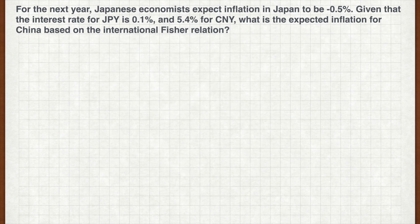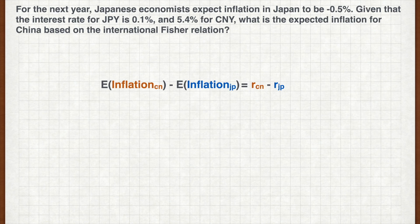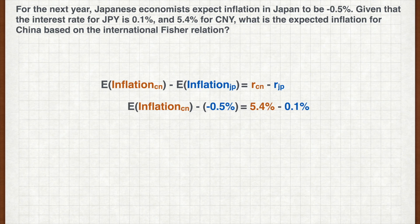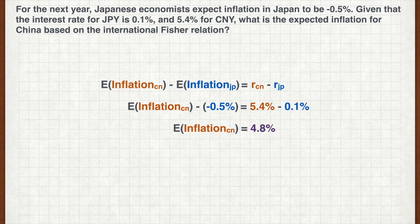We're back. Using the international Fisher effect equation, with expected inflation in Japan at minus 0.5%, a 5.4% interest rate in China, and a 0.1% interest rate in Japan, the expected inflation in China is therefore 4.8%.